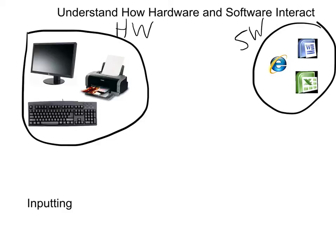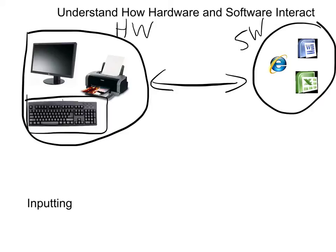So we've got to figure out how the two communicate with each other. Anybody have any ideas? Programs. What about that word that's at the bottom? Inputting, right? So we use something like a keyboard, and we input the data. We input data and interact with software by typing commands, such as naming docs, selecting options, and saving.